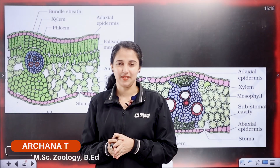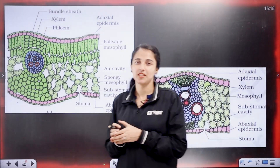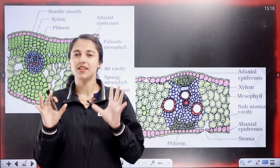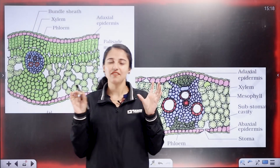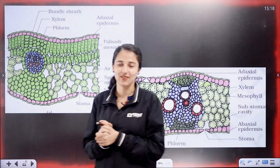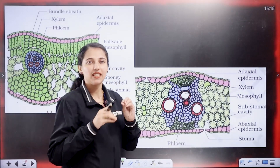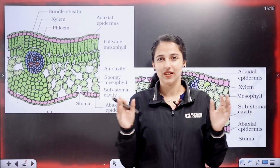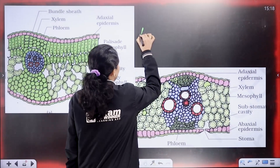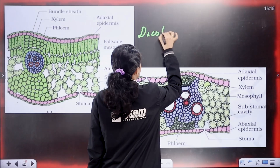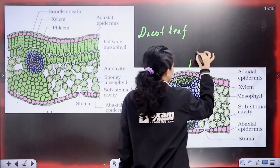Anatomy of Leaf. We are learning about root and stem, and now a little bit about the leaf. Now let's compare — we are learning about the dicot leaf and the monocot leaf.